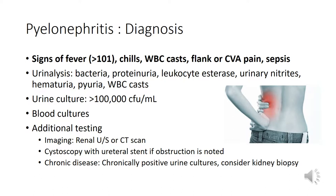Diagnosis of pyelonephritis includes recognizing fever greater than 101, chills, flank pain, and CVA tenderness — some patients may be septic. On urinalysis, they will have bacteria, leukocyte esterase, usually nitrites, and possibly red and white blood cells. Urine cultures will come back greater than 100,000 organisms. Blood cultures should be obtained, as they may be positive if the patient is septic and the infection has spread to the bloodstream.